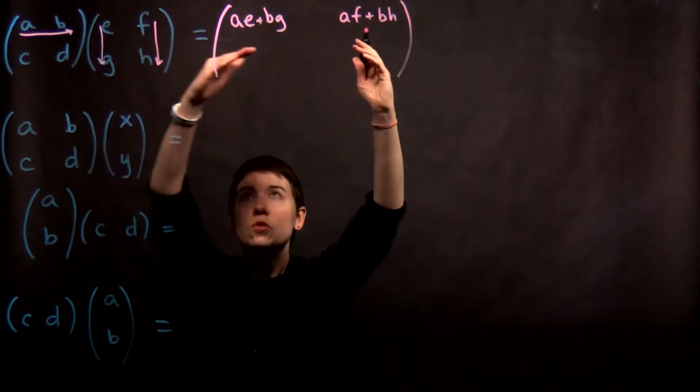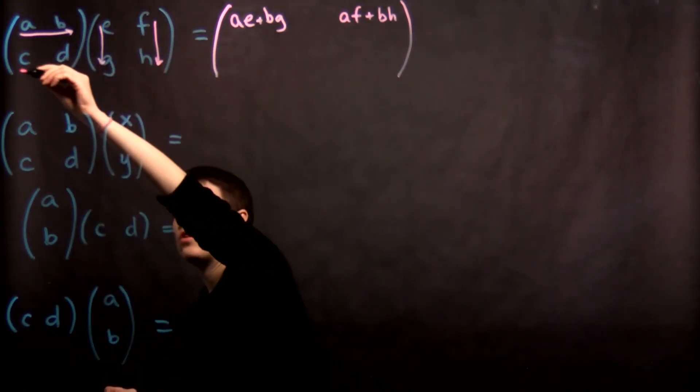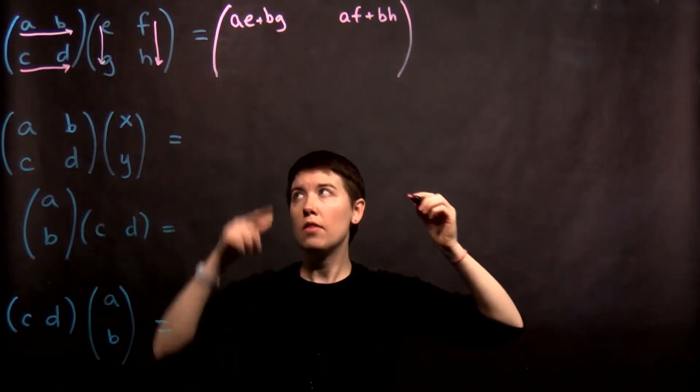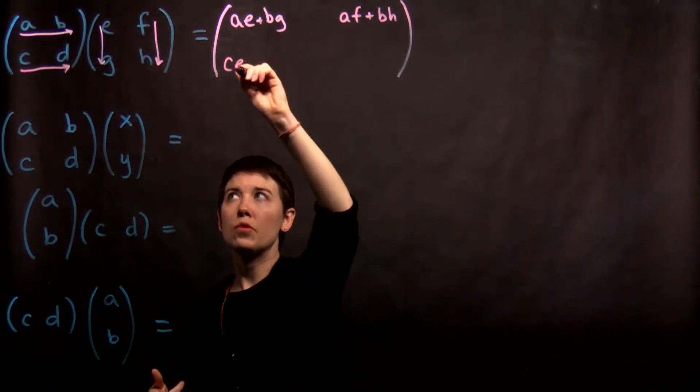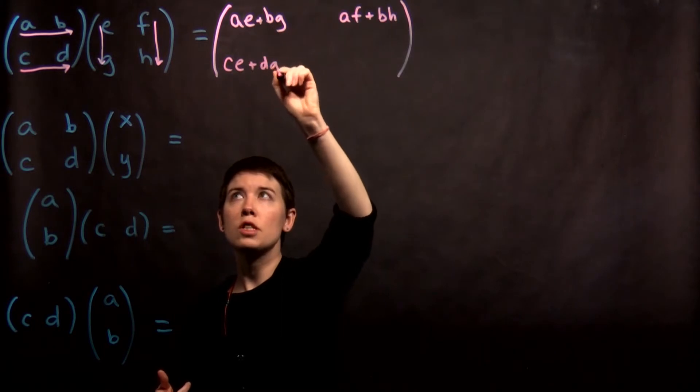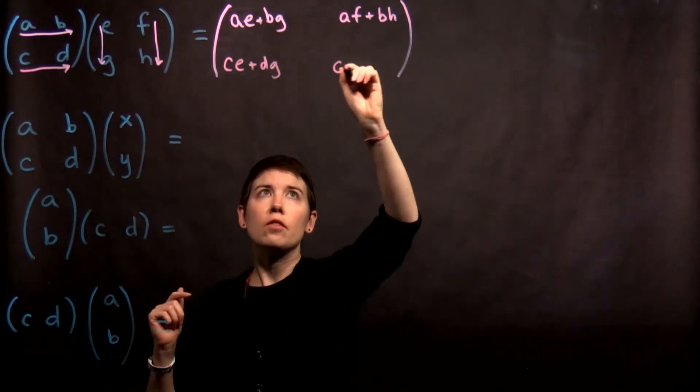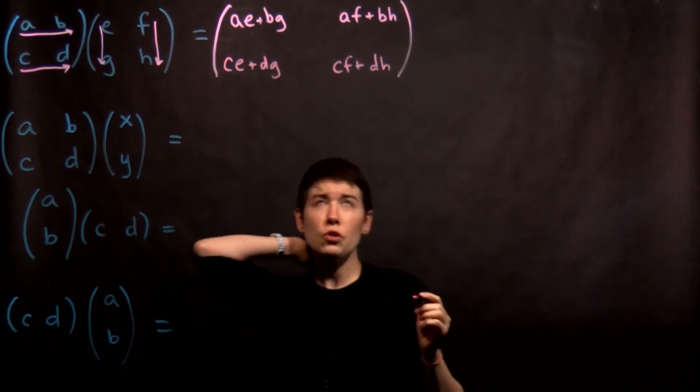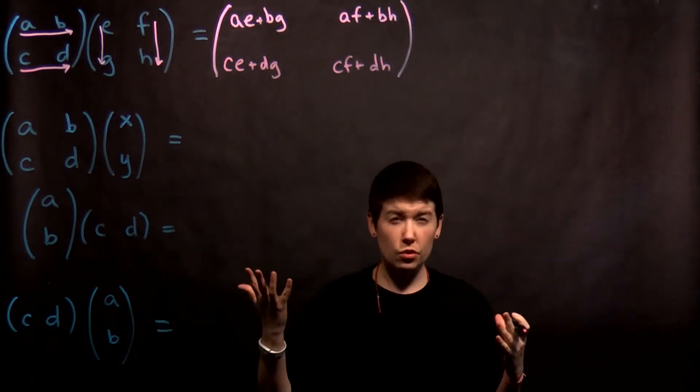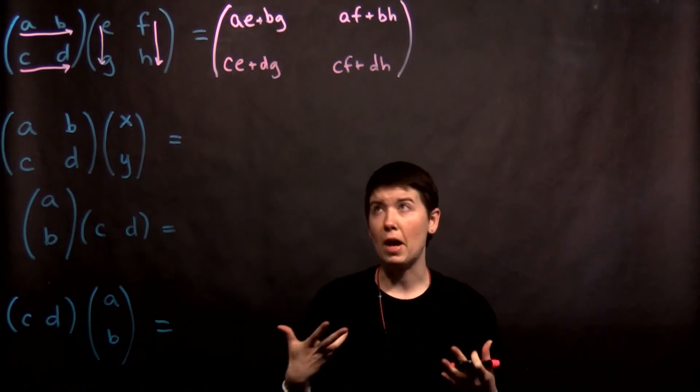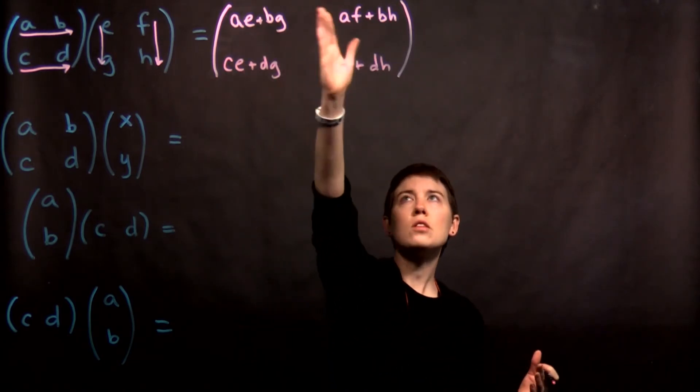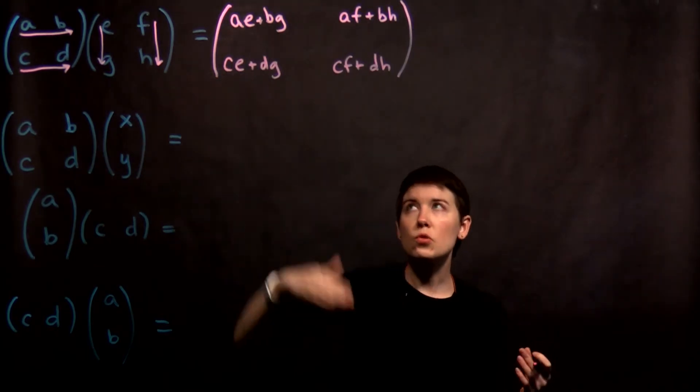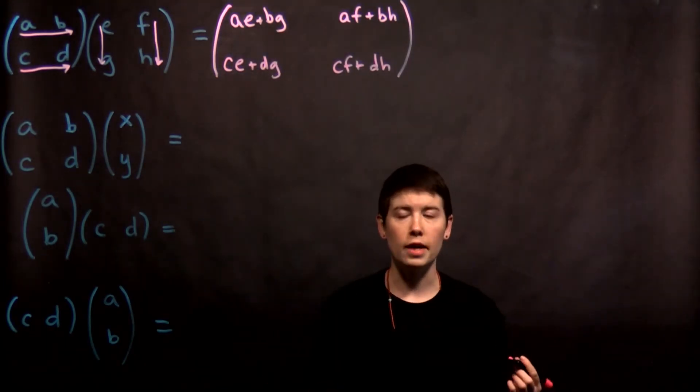So now for the second row, we're using the second row of that first matrix, and again then the first column, and then the second column. So c e plus d g and then c f plus d h. And you can imagine that if these are just integers, the order itself doesn't matter per se. And you want to leave enough space so it's really clear where the different entries occur. So this is what that matrix multiplication would look like.